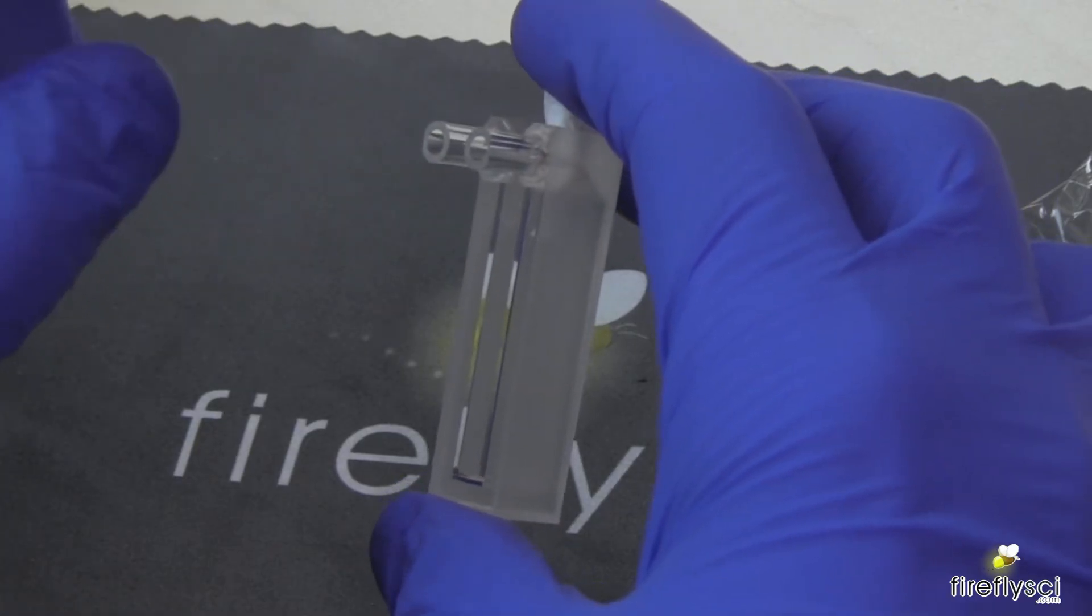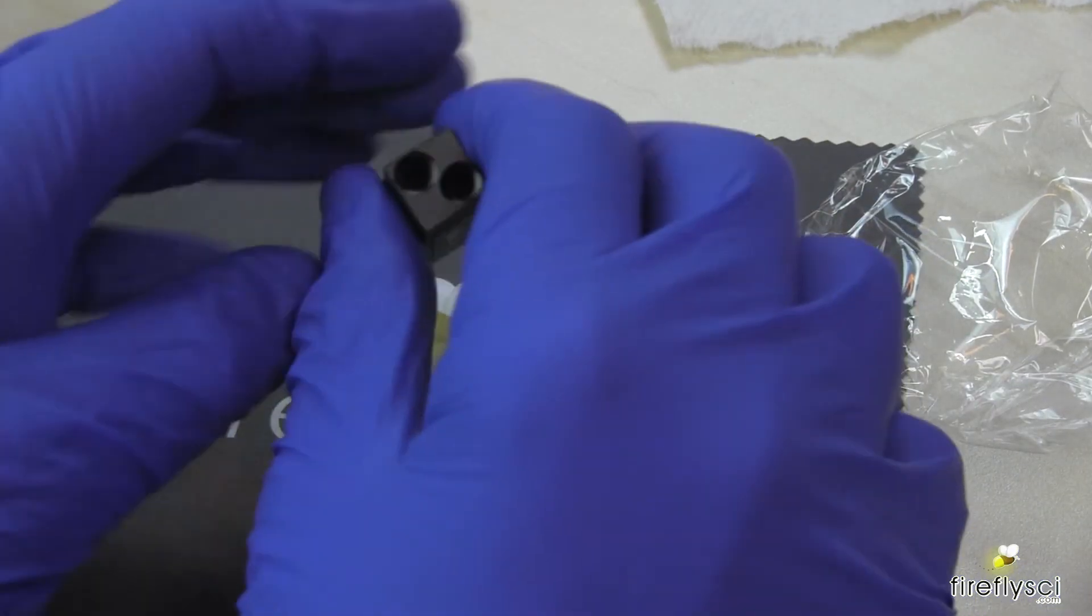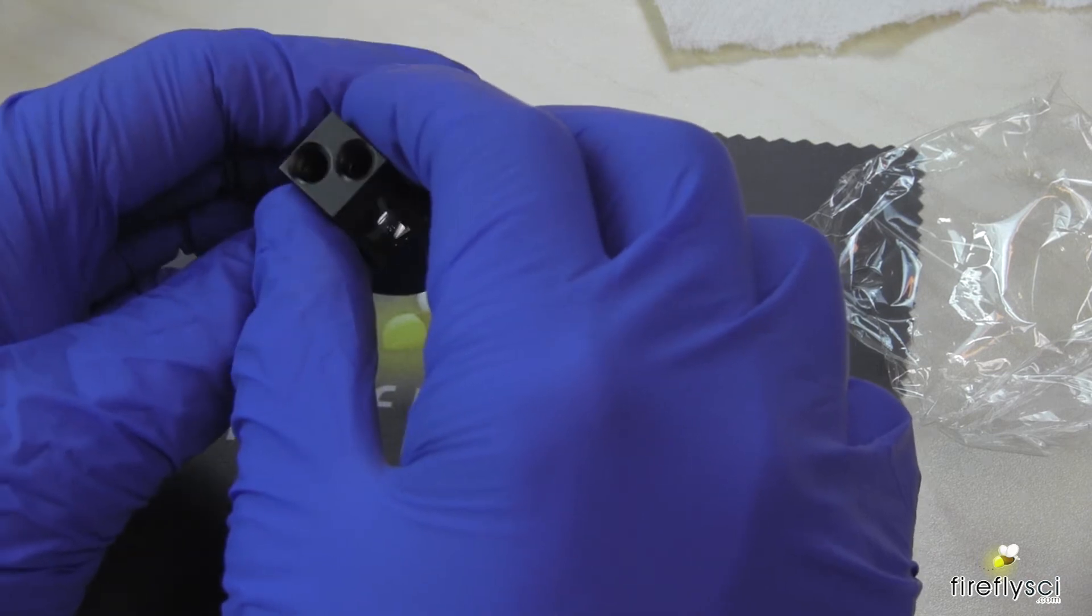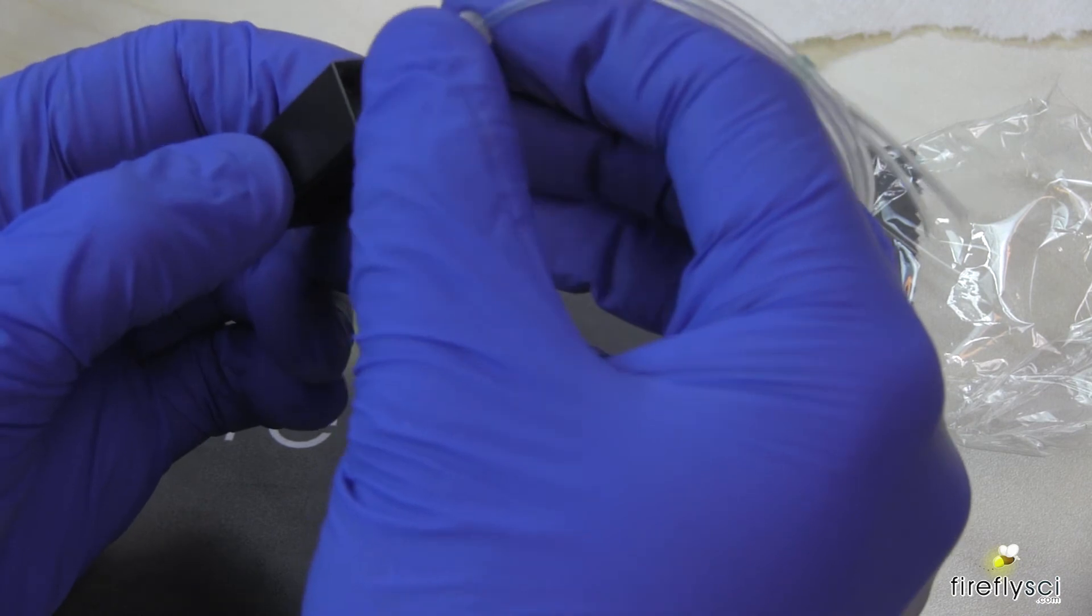Some have the inlet and outlet tubes on the face of the cuvette. This flow cell we see here has detachable inlet and outlet tubes, or in this case it's M6 connectors, which screw into these ports right here.